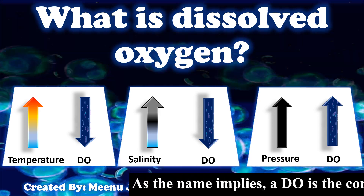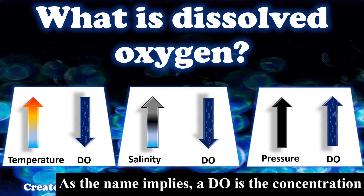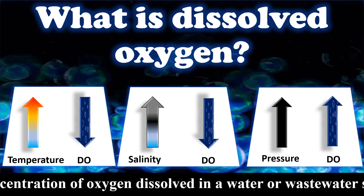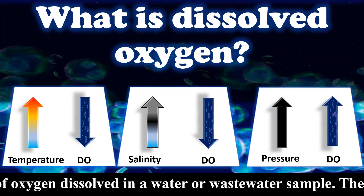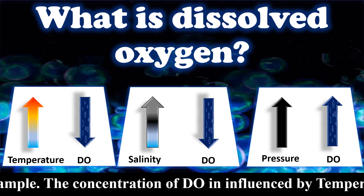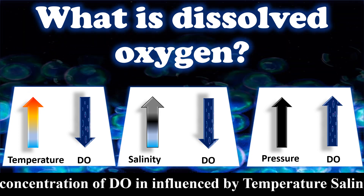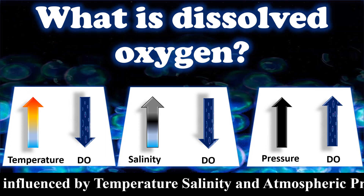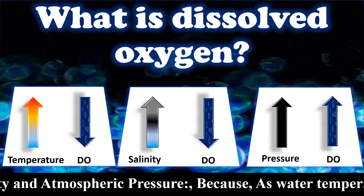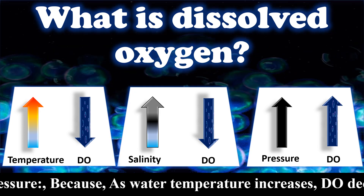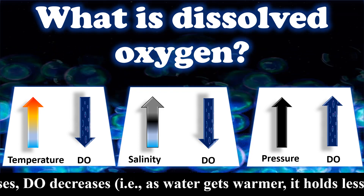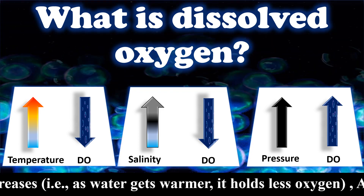As the name implies, Dissolved Oxygen is a concentration of oxygen dissolved in a water and wastewater sample. The concentration of Dissolved Oxygen is influenced by temperature, salinity, and atmospheric pressure. As water temperature increases, dissolved oxygen decreases — that is, as water gets warmer, it holds less oxygen.